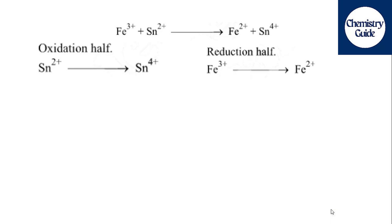The reduction half is Fe³⁺ on the left side and Fe²⁺ on the right side. Because the oxidation state is decreasing from Fe³⁺ to Fe²⁺, it is the reduction half.